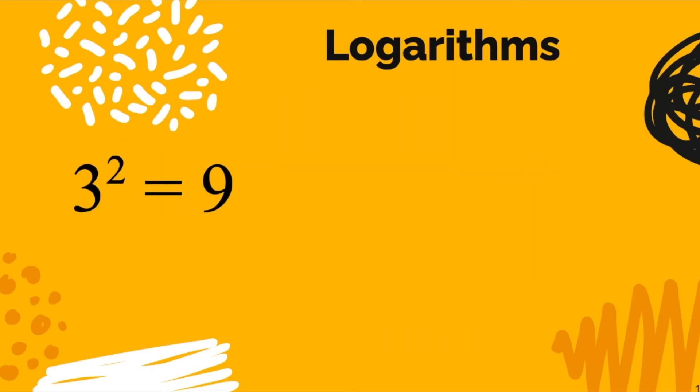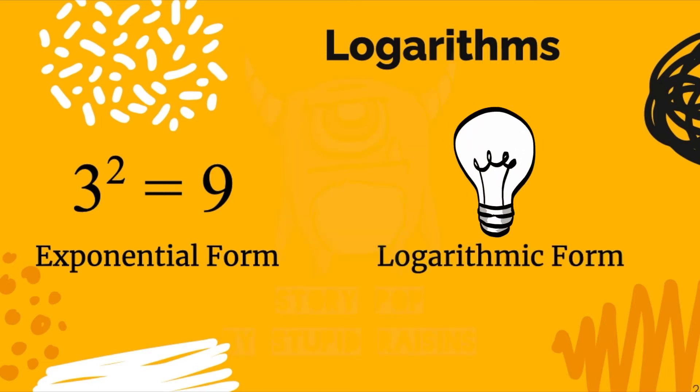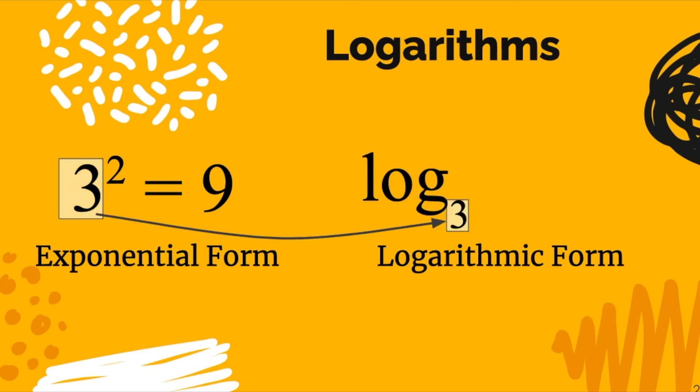Let's return to 3 squared equals 9. I said this was called exponential form. Well, it turns out there's a logarithmic form of the same information. Those three numbers, the 3, the 2, and the 9, can be arranged in a logarithm. First we write the word log. Then we take the base in the exponential form, which is 3, and that becomes our base in the logarithmic form. So now we have log base 3.